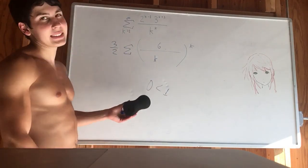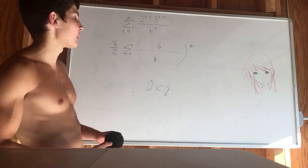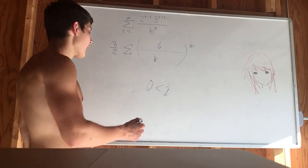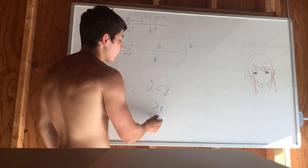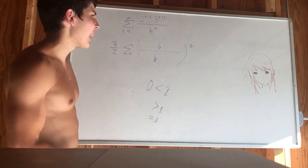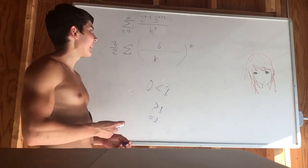So by the root test, this absolutely converges, which implies that it also converges, which was what the question was asking, whether it converges or diverges. If this had been greater than 1, it would diverge. If it had been equal to 1, it would have been inconclusive by the root test. But since it's less than 1, it converges.